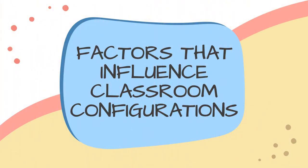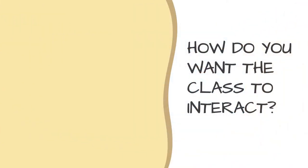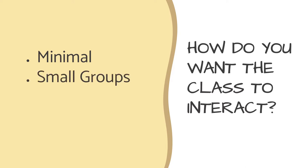Here are a few factors that can influence the configuration of the classroom. First, how do you want the class to interact? Minimally — meaning you prefer students to work more independently or have more whole-class instruction — you would probably prefer a rows-and-columns seating arrangement, as it promotes focus. Small groups or pairs is good for quiet interaction and promotes collaboration on a smaller scale. Large groups of four to five students is good for teamwork and cooperation.